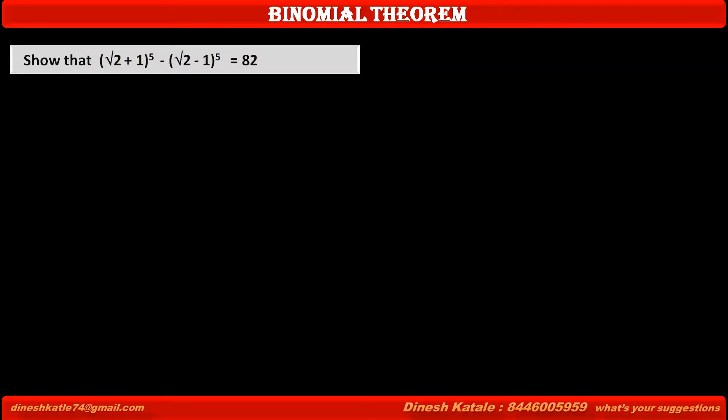In this problem, we have to show that (√2 + 1)^5 minus (√2 - 1)^5 is equal to 82 by using the binomial theorem.